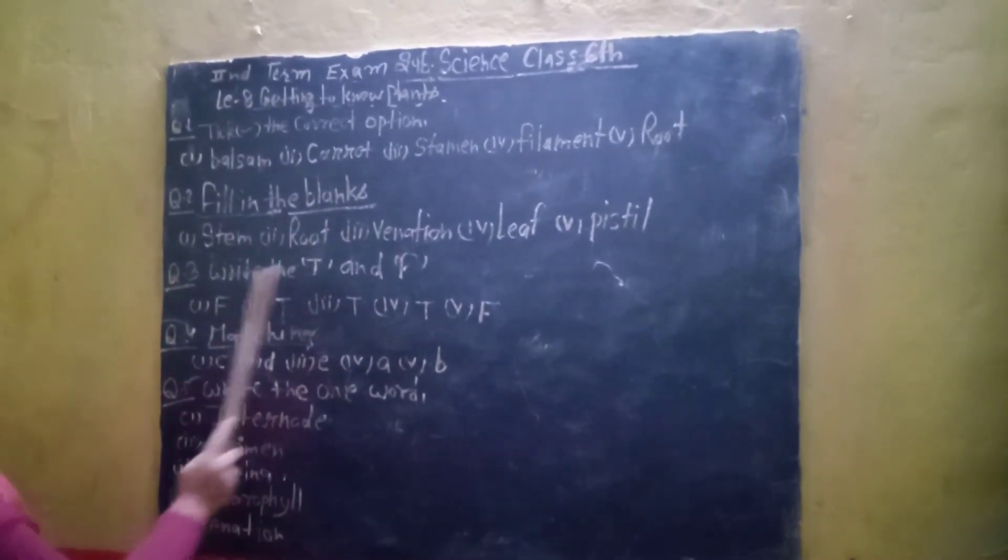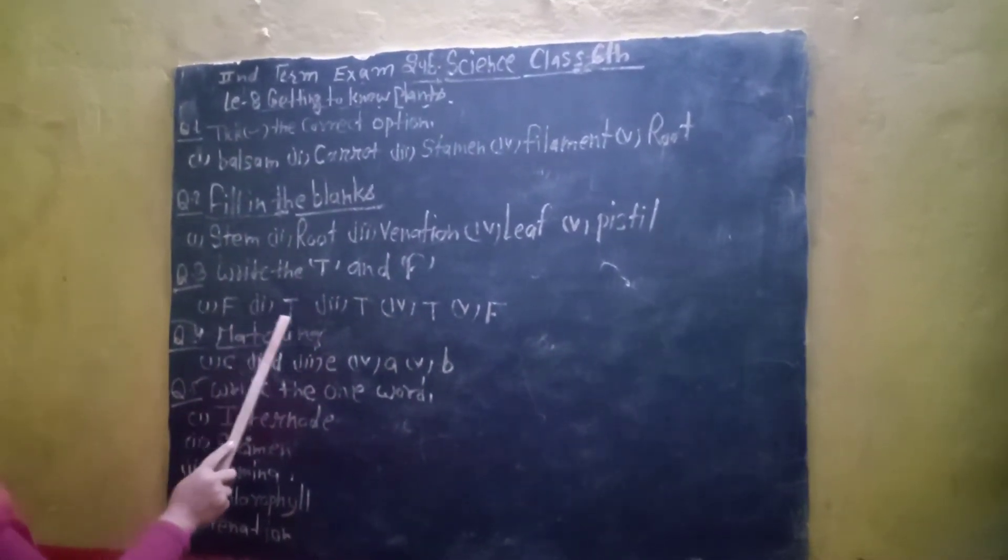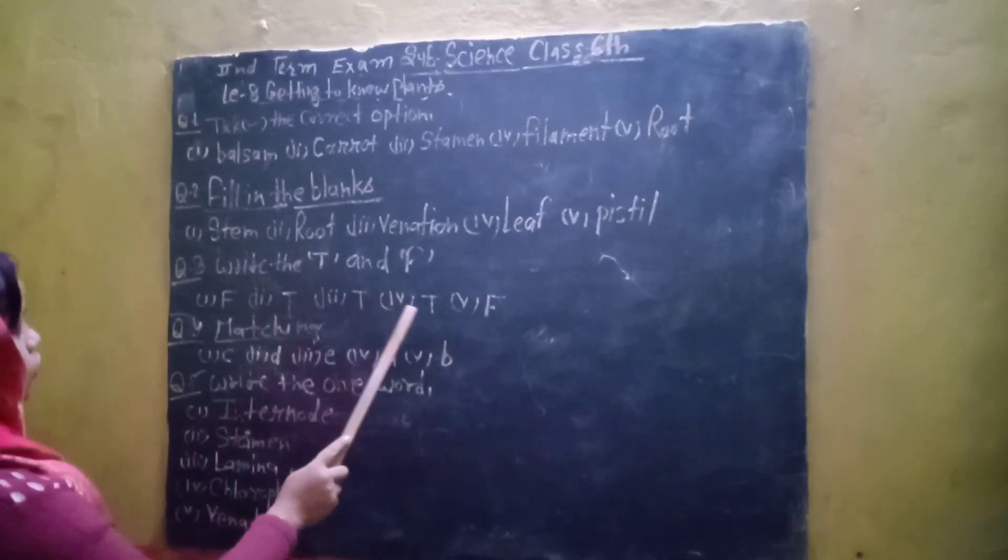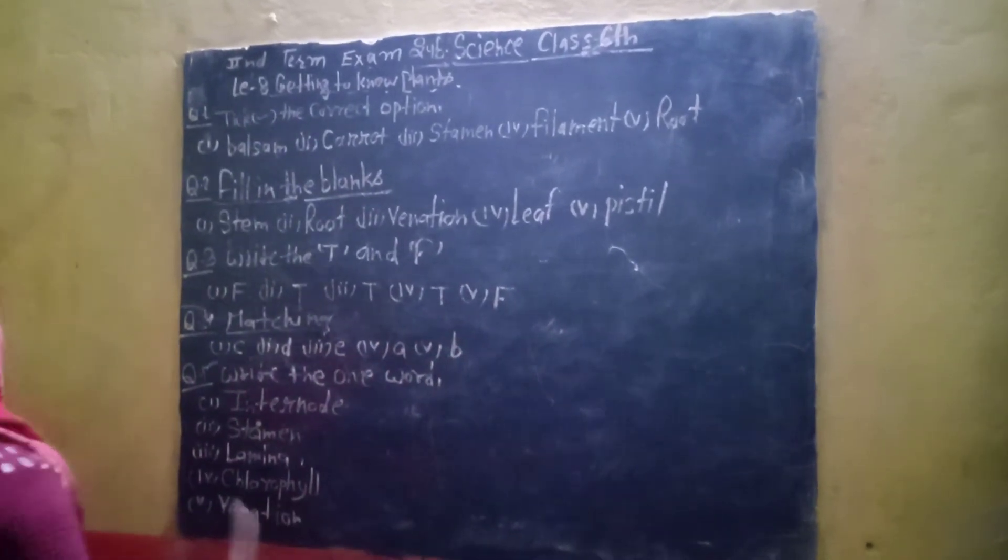Question No. 3 Write True or False. First False, Second True, Third True, Four True, Five Me Hulsan.